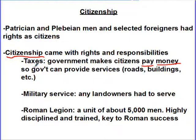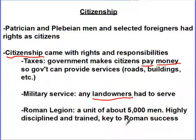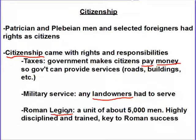Taxes go into paying the military and building roads, all these things — the tax is very key in Roman society. Military service: any person who owns land has to take part in the military. This military is broken up into legions — units of about 5,000 men, highly disciplined and trained, and key to Roman success. Remember in ancient Greece it was the phalanx; the Romans took the best parts of that but allowed more individual success — they fight as a unit but as individuals.